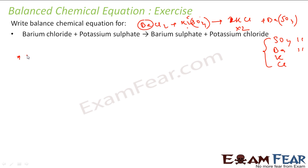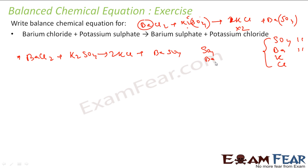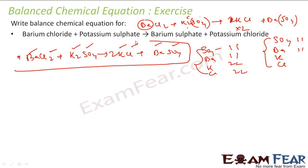Potassium part is 2 here and 1 here, so we will multiply to get 2. What you get is BaCl₂ plus K₂SO₄ equals 2KCl plus BaSO₄. Now let us verify: Sulphate is 1 here and 1 here — balanced. Barium is 1 and 1 — balanced. Potassium is 2 and 2 — balanced. Chlorine is 2 here and 2 here — balanced. This is a balanced equation.